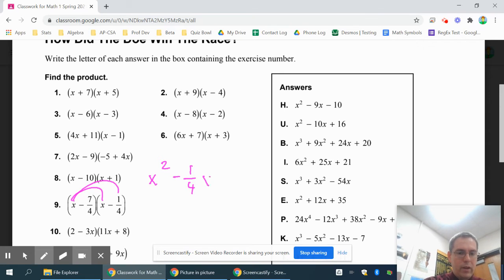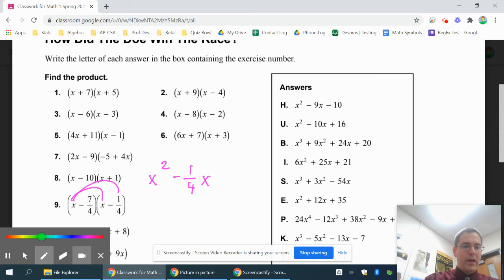Then I'm going to switch colors so it stands out a little bit. I take the negative 7 fourths. I usually draw a little bracket there just to show that I'm not just multiplying 7 fourths. I'm multiplying the entire negative 7 fourths times x and times negative 1 fourth.